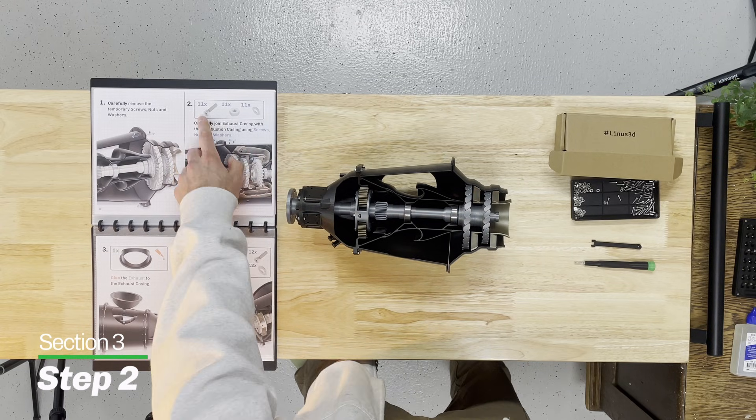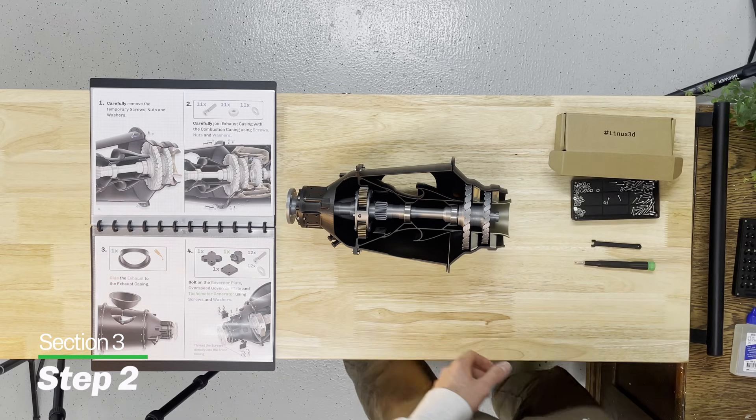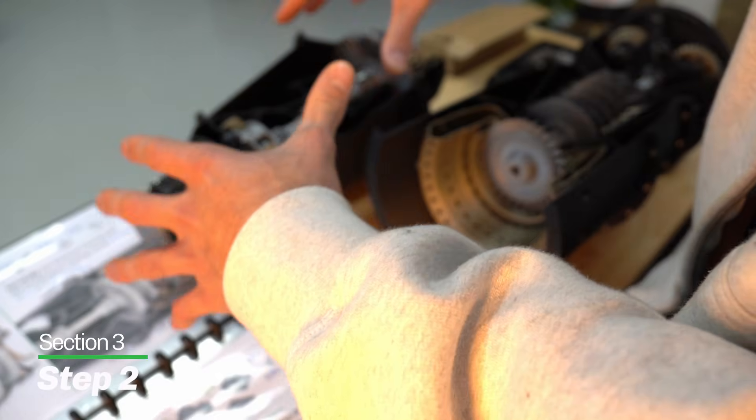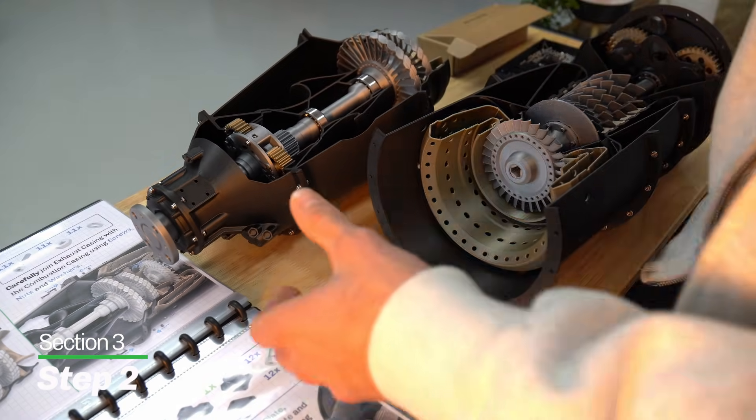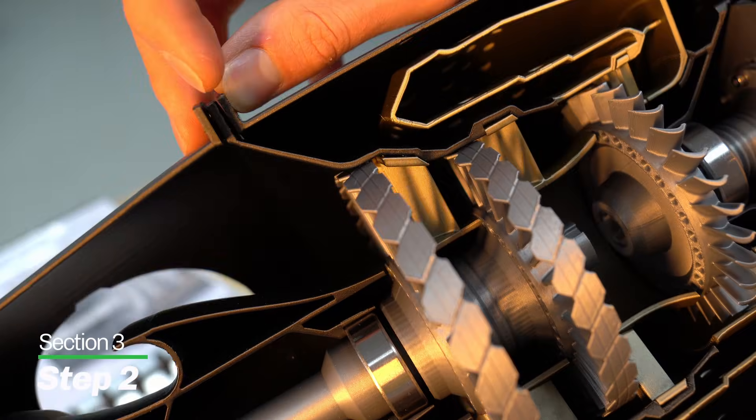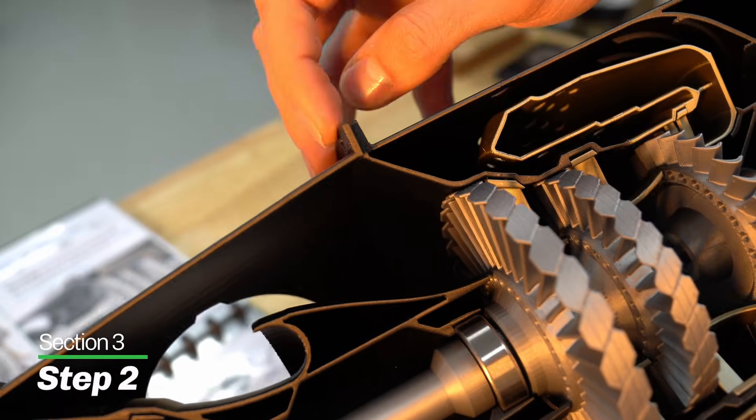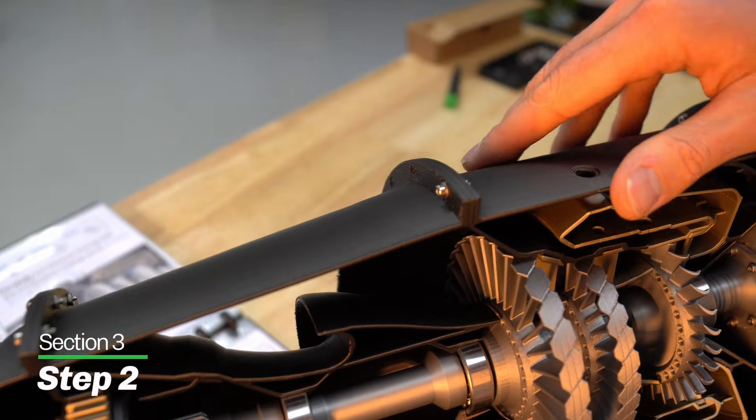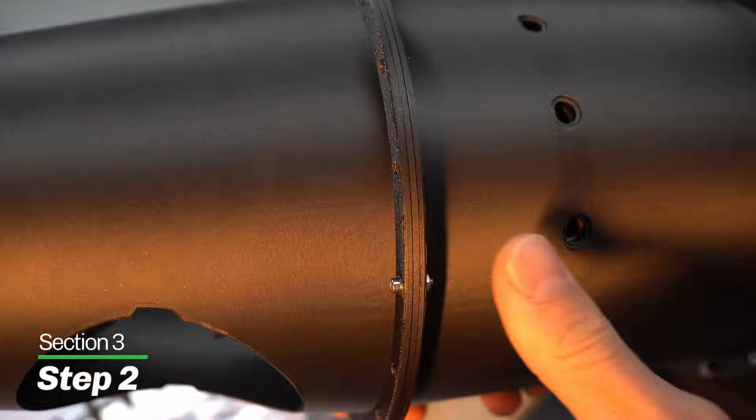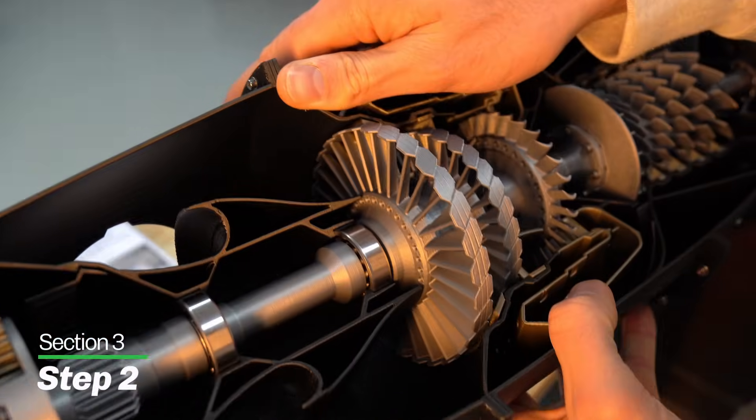On to the second step with 11 screws, nuts and washers. This is where the fun starts. We're going to grab our assembly we built in section number one and carefully join these two sections together. The turbine casing is getting sandwiched in between the other two. Positioning this and pushing the screw through all three sections is definitely a little bit more tricky, but take your time.